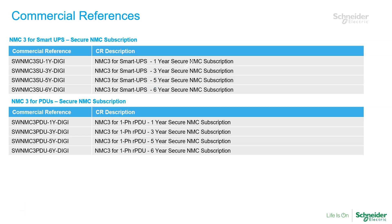To upgrade your firmware via the Secure NMC System Tool, you need a valid SNS subscription. For NMC devices installed in a SmartOps or SmartOps Ultra, including embedded NMCs, purchase a SmartOps subscription. For rack power distribution unit devices, purchase a PDU subscription. For your reference, those commercial references are mentioned here.